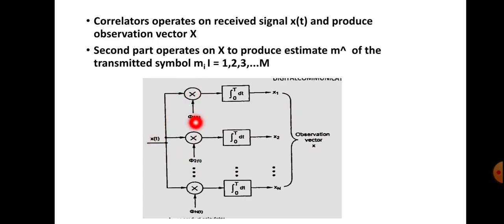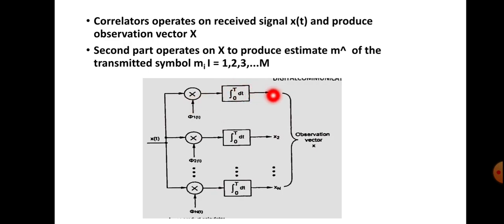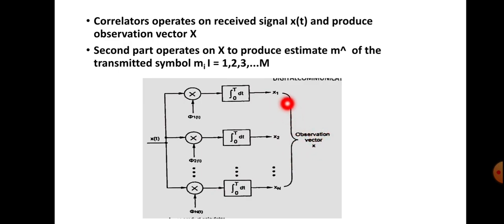To calculate the vectors corresponding to x(t), we utilize orthonormal basis functions. So x(t) is multiplied by the orthonormal basis functions phi-1(t), phi-2(t), up to phi-N(t). Each product is given to the integrator or correlator, which calculates the observation vectors x1, x2, up to x-N. The observation vector x written in column matrix form is x1, x2, up to x-N.